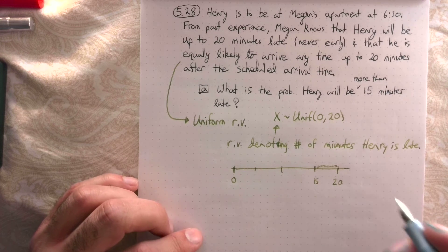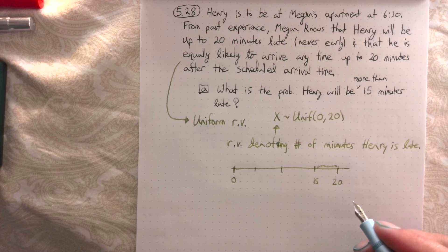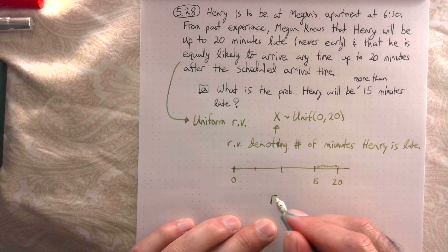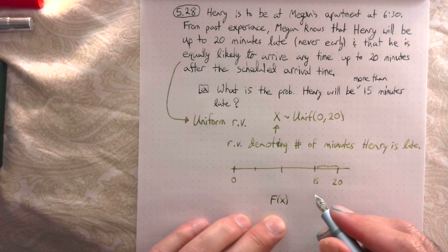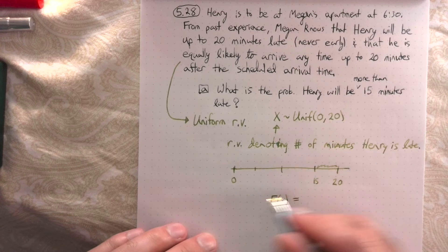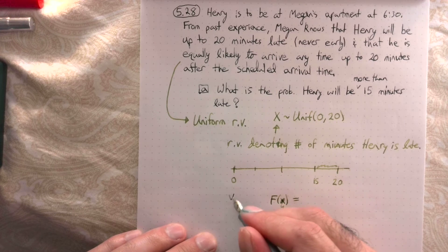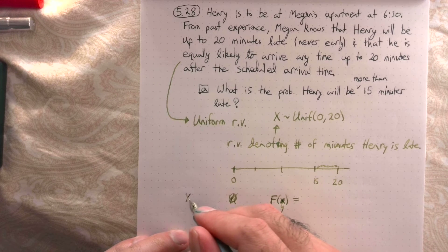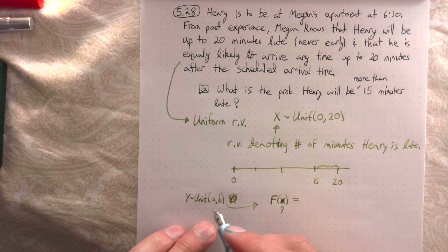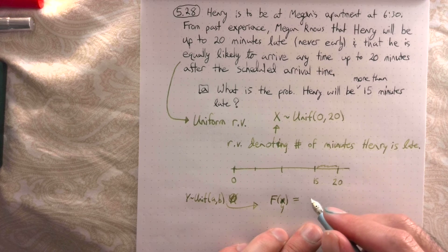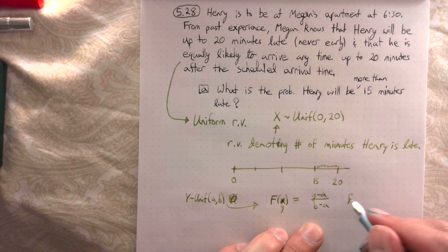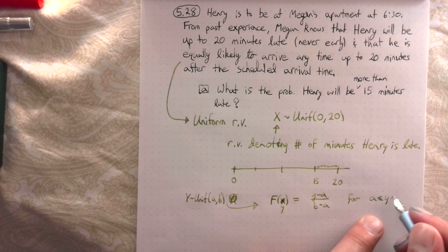What we're doing is using the cumulative density function. If Y is uniform on [a, b], the CDF for a value between a and b is given by F(y) = (y − a) / (b − a), for a ≤ y ≤ b.